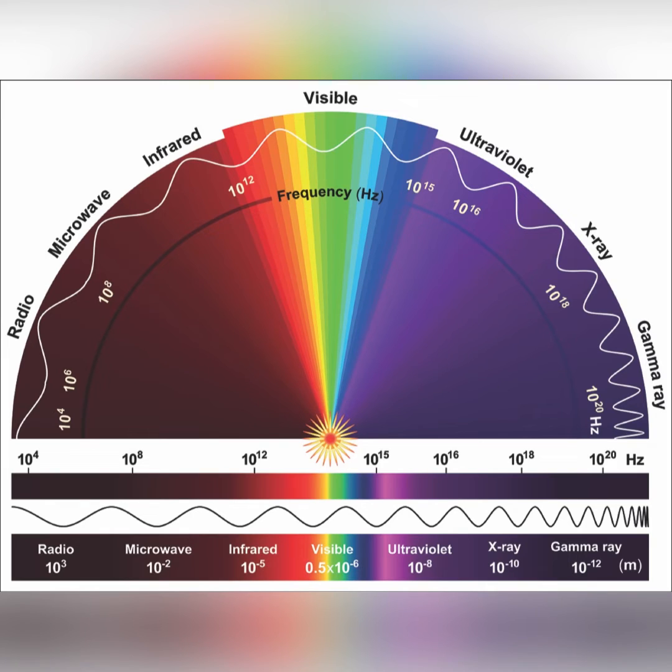Electromagnetic waves are formed when an electric field couples with a magnetic field. Magnetic and electric fields of an electromagnetic wave are perpendicular to each other and to the direction of the wave.